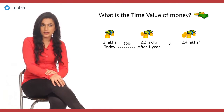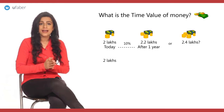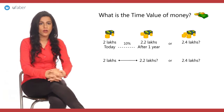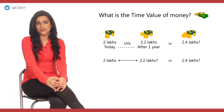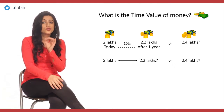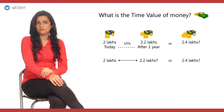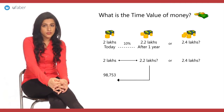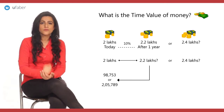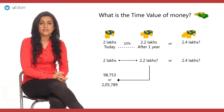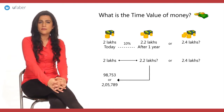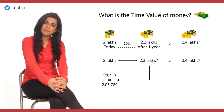This is where the concept of TVM becomes important for decision making. How do you decide what 2 lakhs will be worth after a year, or how much 2.2 lakhs or 2.4 lakhs is worth today, so that you could make a decision? How do you calculate an accurate value in today's terms for the 2.2 lakhs receivable after a year — is it worth 98,753 today, or is it worth 2 lakh 5,789? How do we arrive at the value of a certain sum of money we are to receive in the future? Is there some mechanism that helps us compare the value of something at different points in time? Let us see.